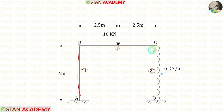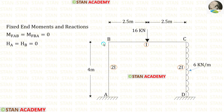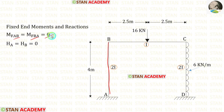The height of the columns is 4 meters and the length of the beam is 5 meters. Now let us find the fixed end moments and reactions. In column AB there is no load, so the fixed end moments M_AB and M_BA will be 0. Also, the horizontal reactions H_A and H_B will be 0.